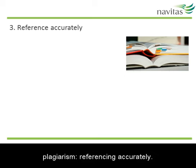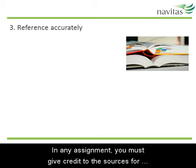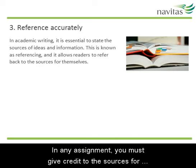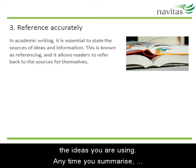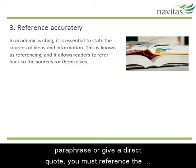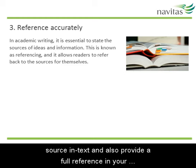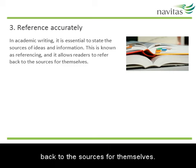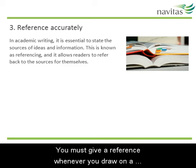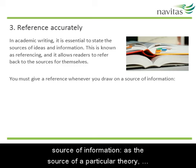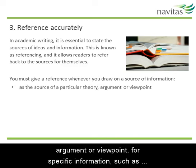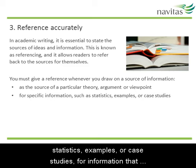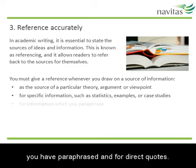This leads us to the next strategy for avoiding plagiarism: referencing accurately. In any assignment, you must give credit to the sources for the ideas you are using. Any time you summarise, paraphrase or give a direct quote, you must reference the source in text and also provide a full reference in your reference list. This allows readers to refer back to the sources for themselves. You must give a reference whenever you draw on a source for a particular theory, argument or viewpoint, for specific information such as statistics, examples or case studies, for information that you have paraphrased, and for direct quotes.